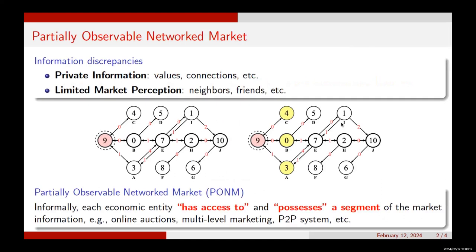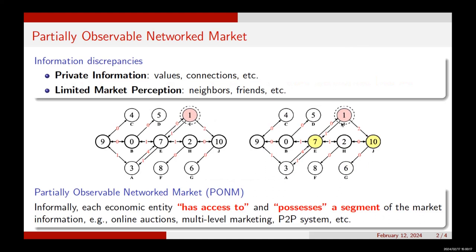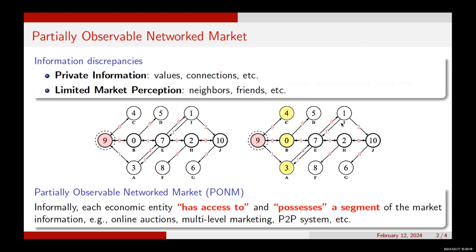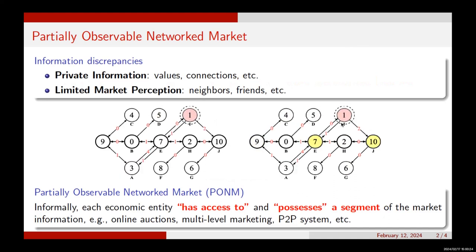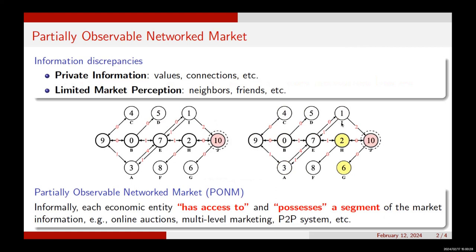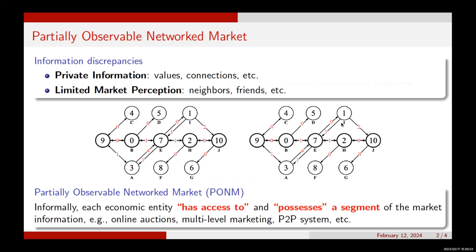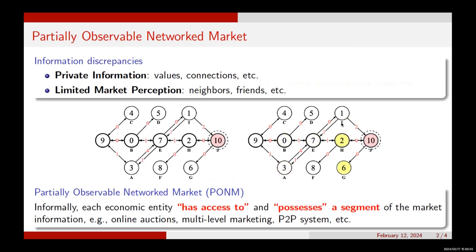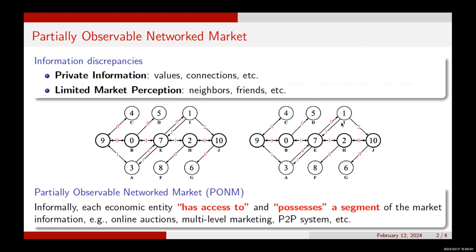In many markets, especially large ones, there is an information discrepancy among economic entities. This discrepancy arises from two key factors. Firstly, economic entities often hold exclusive information such as private valuations for commodities or individual connections to others. Secondly, the vast size of the market makes it impossible for economic entities to gain comprehensive knowledge of all market entities and their connections. Example markets include online auctions, intermediary markets, P2P systems, and so on.